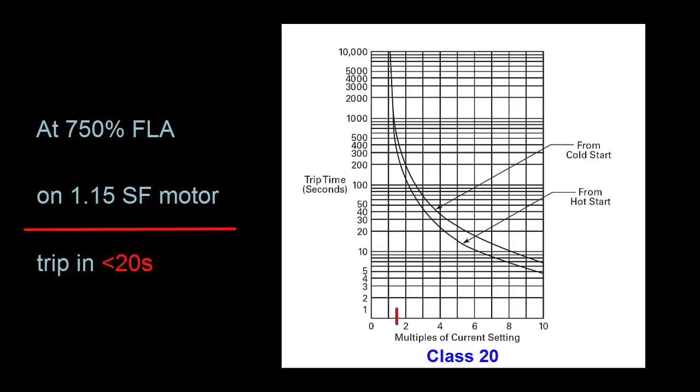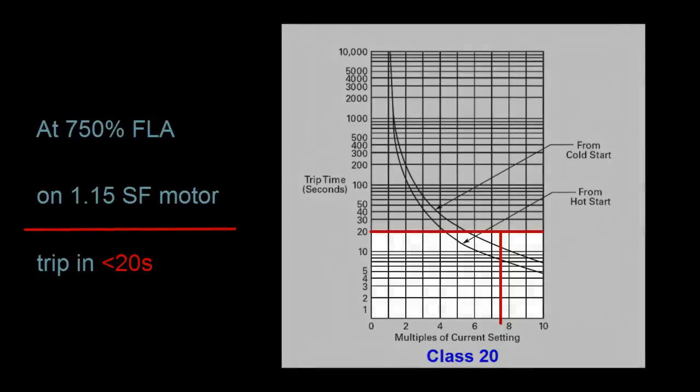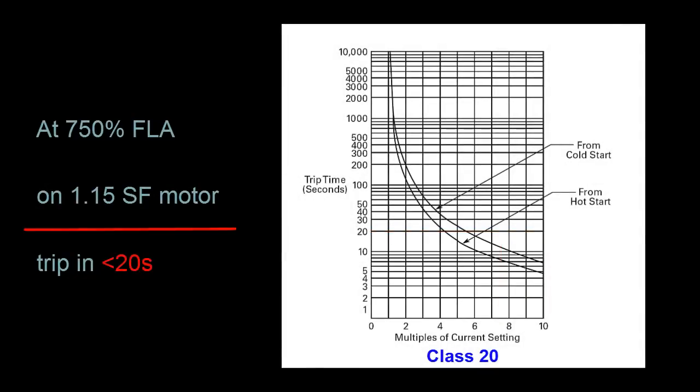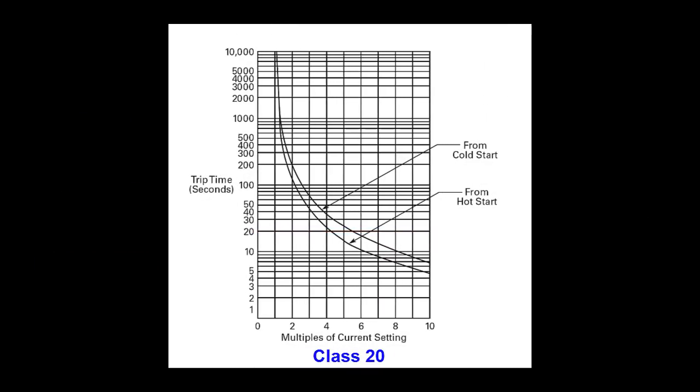So if we look at 7.5 times the FLA dial, we would expect to see it trip in less than 20 seconds, which it does. A trip class of 10 means that it would take less than 10 seconds to trip under those same conditions. The big takeaway from this is the lower the trip class, the less time it will take to trip.